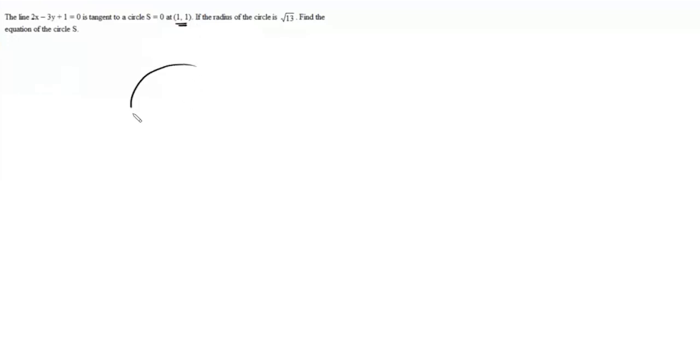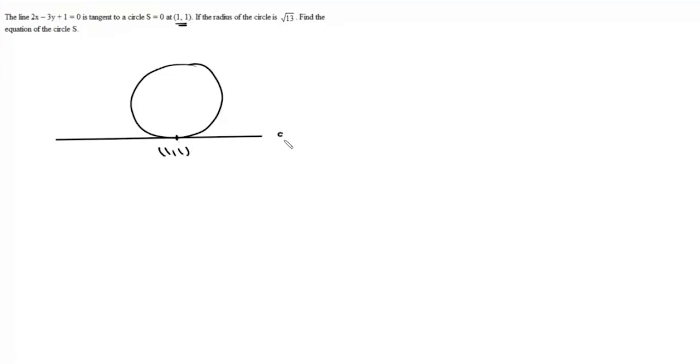This line is tangent to circle s equals 0 at point (1,1), and the radius of the circle is root 13. Find the equation of the circle. There are many ways to solve this question. One way: we have a circle which touches this straight line at (1,1), and this line is 2x − 3y + 1 = 0.